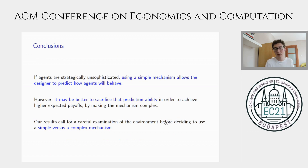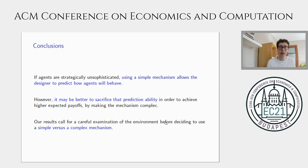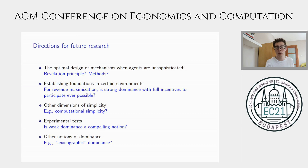To summarize: when agents are unsophisticated, it might be tempting to use a simple mechanism because it allows the designer to predict play. However, we showed that sometimes it may be better to sacrifice that prediction ability to simply achieve better payoffs — we can make the mechanism complex and unambiguously improve the payoff for the designer. The final takeaway is not that there is something wrong with simple mechanisms, but that you should carefully examine the environment before deciding whether to use a simple or complex mechanism. It's not just a function of agents' sophistication. Thank you very much for your attention.